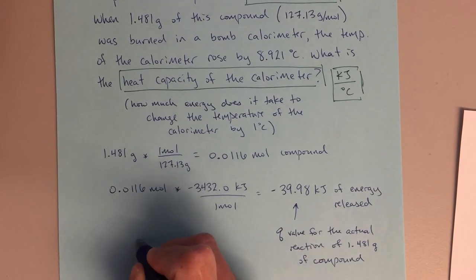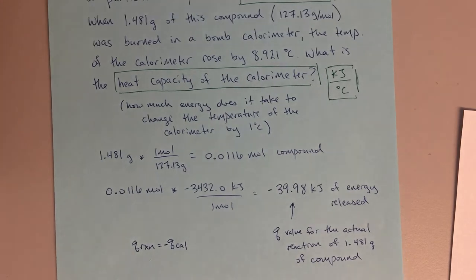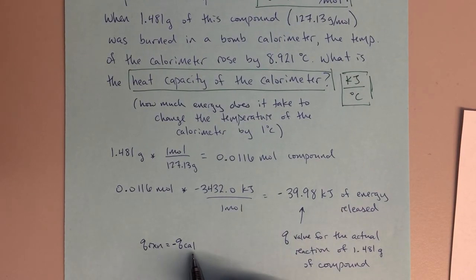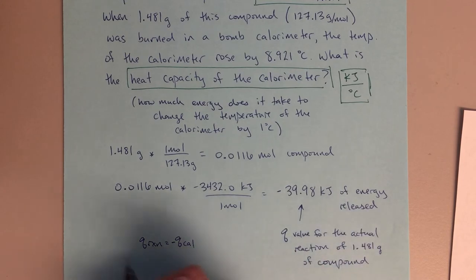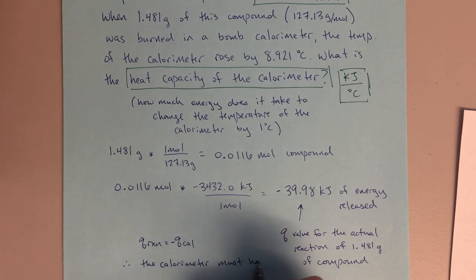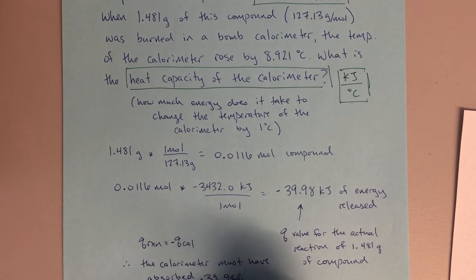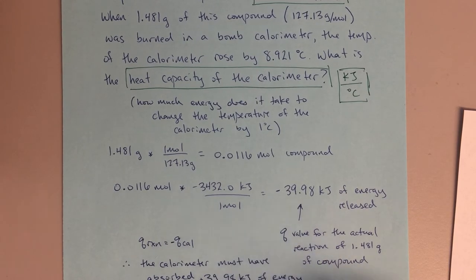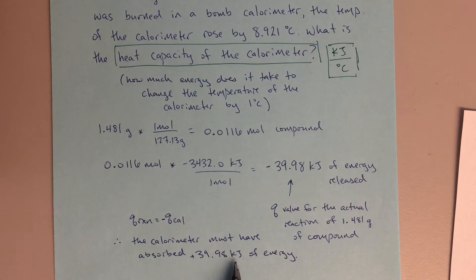And so that Q value for the reaction will equal the minus Q cal. Q reaction will have the opposite sign as the amount of energy that the calorimeter absorbs. Another way to say this, if this is confusing, is we can say this is the energy released, therefore the calorimeter must have absorbed positive 39.98 kilojoules of energy. So what we're saying here is really these words: the calorimeter must have absorbed the same amount of energy, but opposite in sign. This indicates it's releasing, this indicates it's absorbing.